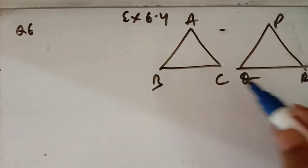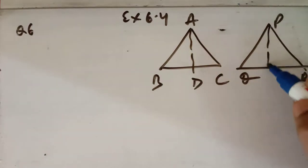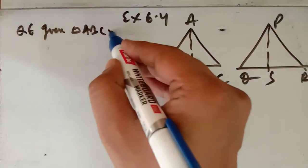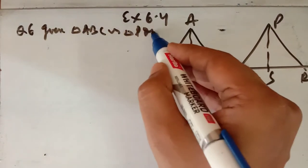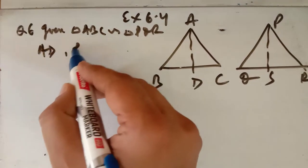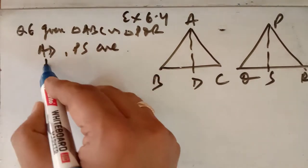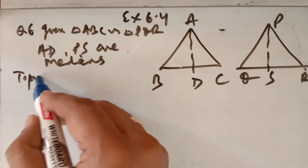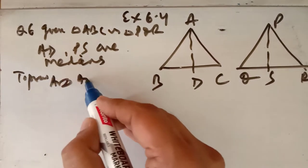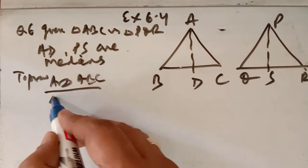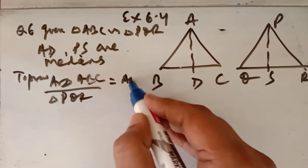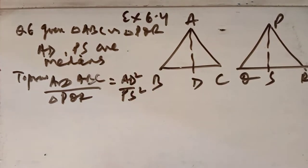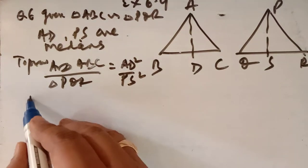Given: triangle ABC is similar to triangle PQR, and AD and PS are medians. You have to prove that the ratio of area of triangle ABC to area of triangle PQR is equal to AD² upon PS² — that is, the ratio of area equals the ratio of their corresponding medians squared.